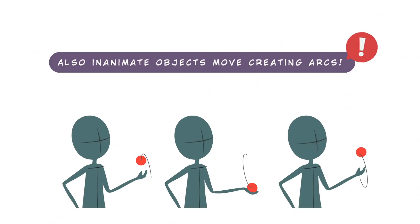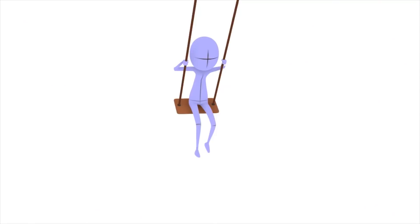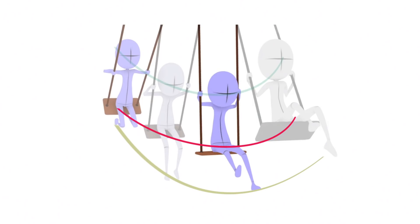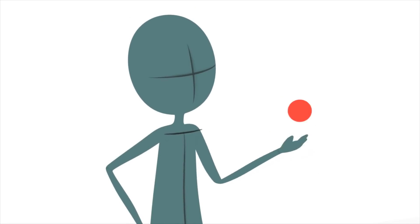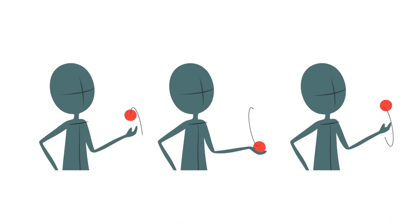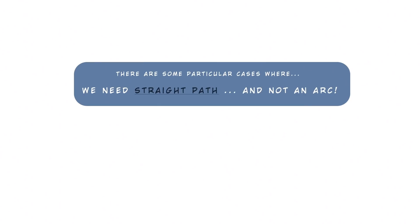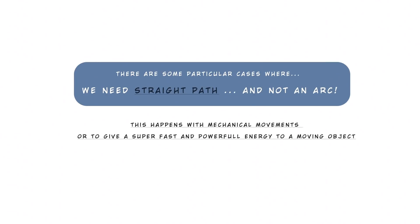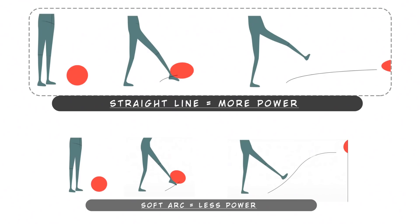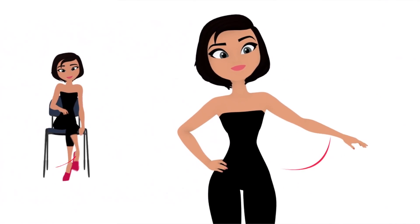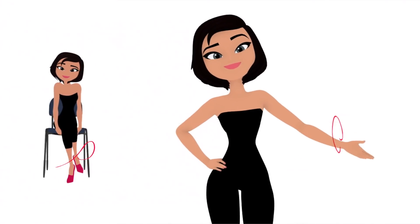Also inanimate objects move creating arcs. A character on a swing has different arcs for the swing seat, the feet, and the head. A ball bouncing on a character's hand creates circular arcs. There are some particular cases where we need a straight path and not an arc — this happens with mechanical movements or to give super fast and powerful energy to a moving object, like a more powerful kick that will have a straighter line compared to a softer one. I really hope you now apply this principle so you will see how important arcs are.